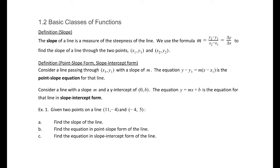Slope of a line is a measurement of the steepness of the line. We use the formula m equals y2 minus y1 over x2 minus x1 to find the slope of the line through the points (x1, y1) and (x2, y2). We often write that as delta y over delta x — the change in y divided by the change in x.